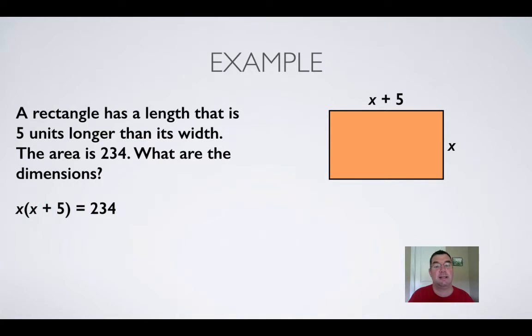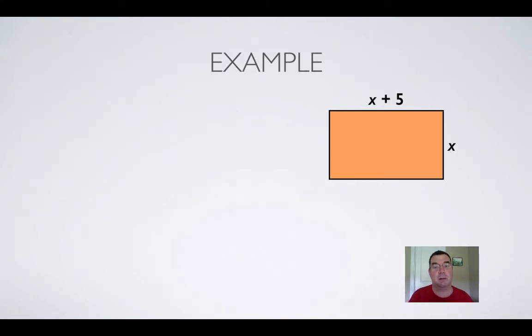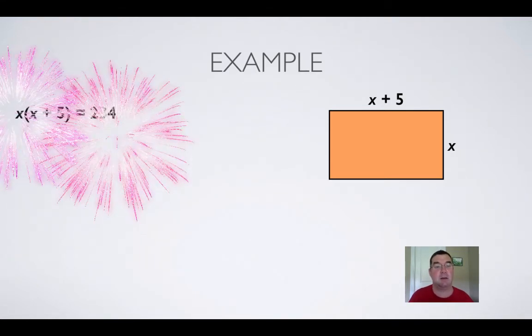So I know that the width x times the length x plus 5 has to equal 234. Alright, so let's go ahead and solve that.